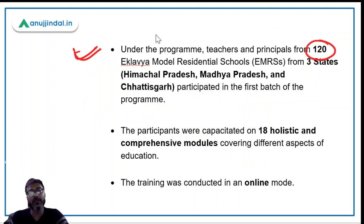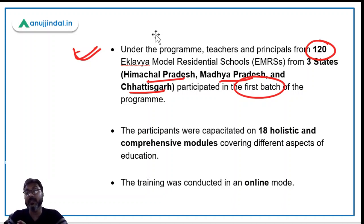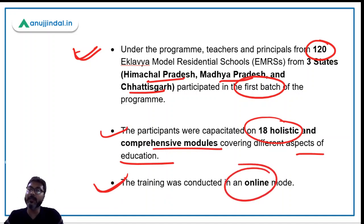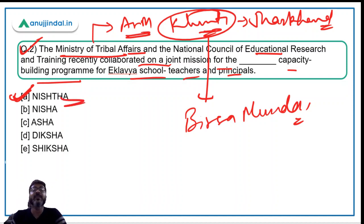Under this program, teachers and principals from 120 schools across three states — Himachal Pradesh, Madhya Pradesh, and Chhattisgarh — participated in the first batch. The participants were capacitated on 18 holistic and comprehensive modules covering different aspects of education, and the training was conducted in online mode. The correct answer is option A — the NISHTHA capacity building program for Eklavya Model Residential School teachers and principals.